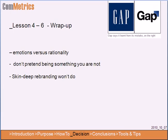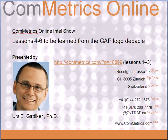So this already brings me to the wrap-up. We have lessons four through six. Lesson four talked about emotions playing a bigger role than rationality when bringing in a new logo. Don't pretend to be something you're not — just bringing in a new logo when nothing has changed won't cut it. And number six: skin-deep rebranding won't do; you have to do a little bit more than that. That brings me to the end of today's short video, the Commmetrics Online Intel Show — lessons four through six to be learned from the Gap logo debacle. Read about one through three on the blog as well. Thank you for attending this session and I hope to see you again soon.